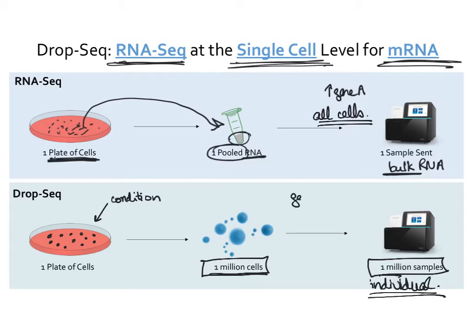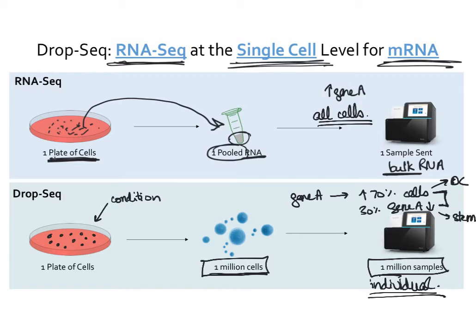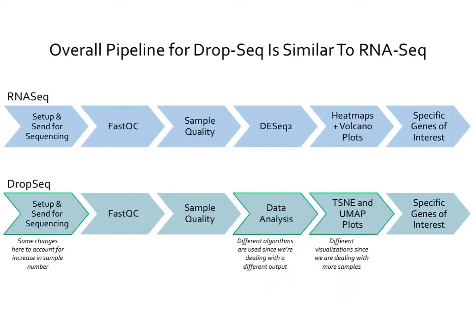Now if I look at gene A, I would actually be able to see that gene A is up in 70% of the cells, and that 30% of the cells maybe actually have gene A down. Maybe there's some difference between these groups — maybe these cells are differentiated and these cells are more stem-like, and maybe that's why we're seeing a difference in how they express gene A. It gives us more information at higher resolution than bulk RNA-seq, where we would have just seen gene A is up. Here we know which cells have it up and which have it down, allowing us to see cell by cell what is happening to our gene of interest.